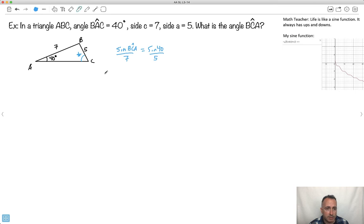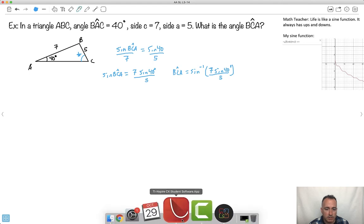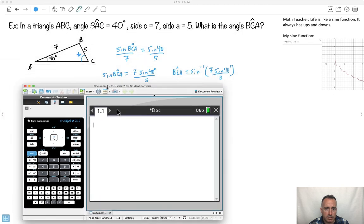Let's find what sine BCA is. So sine of BCA is going to be equal to 7 times the sine of 40 degrees, all that over 5. That means angle BCA, I do inverse sine to undo the sine. So inverse sine of this answer, 7 sine of 40 degrees all over 5. Let's see what that gives me. I need my trusty calculator.